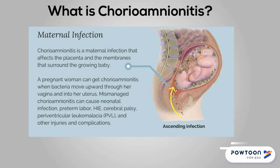Chorioamnionitis is a maternal infection that affects the placenta as well as the fetal membranes. A pregnant woman can get chorioamnionitis via ascending bacteria coming from the vagina into the uterine cavity. Untreated chorioamnionitis can lead to preterm labor, cerebral palsy, as well as multi-system organ failure.